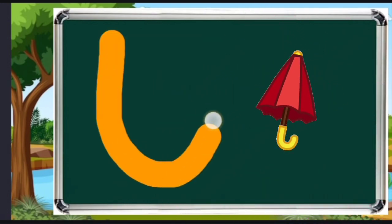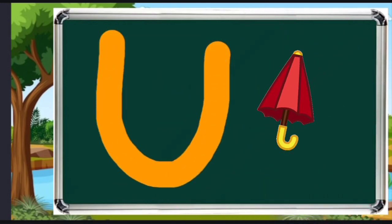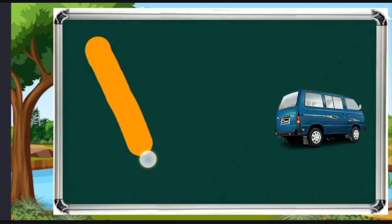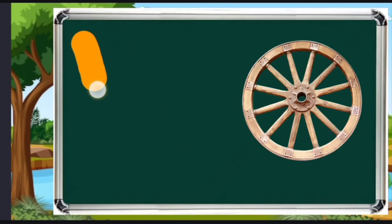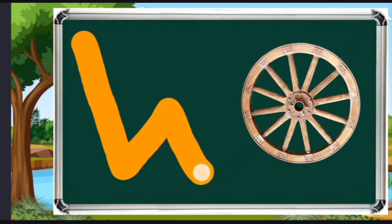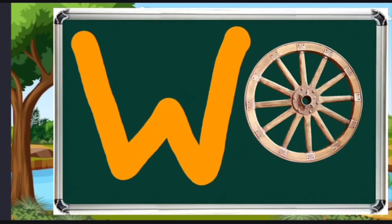U for umbrella, V for van, W for wheel, X for bee.